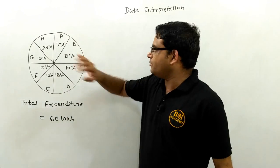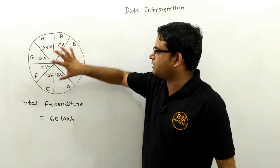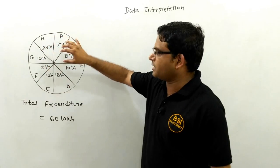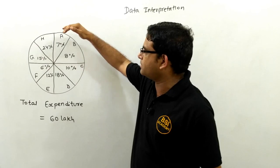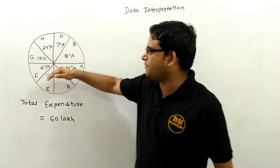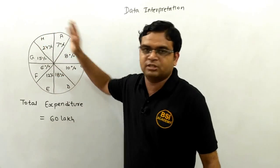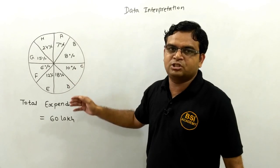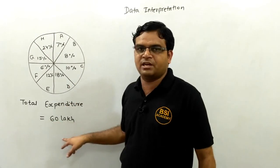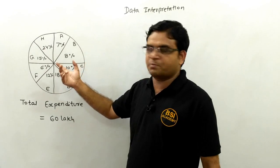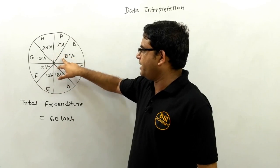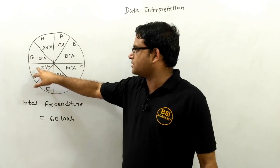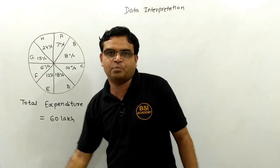This is our question, and this is our pie chart. Our pie chart is divided among eight sectors: A, B, C, D, E, F, G, and H respectively. Their total expenditure is 60 lakh, and their individual expenditure is 7%, 8%, 10%, 18%, 12%, 6%, 15%, and 24%.